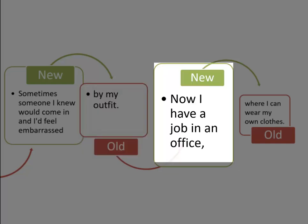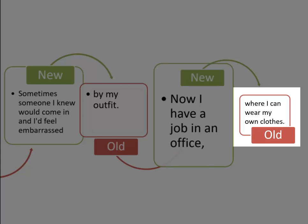Then the first part of the last sentence introduces the new information about her now having a new job in an office. And then it moves on to link back to the old information — the old topic of clothes. Obviously, while she's doing that, she is actually introducing new information too, saying that she can wear her own clothes.